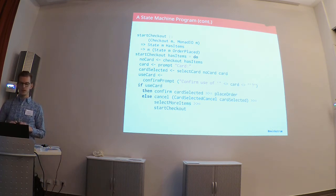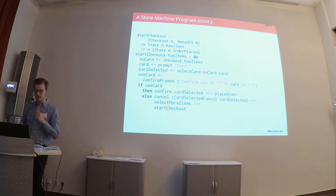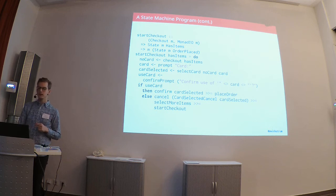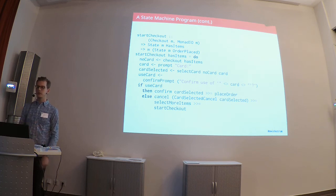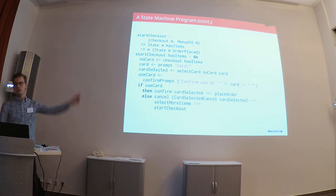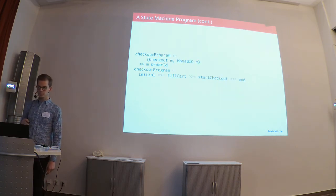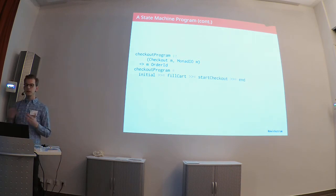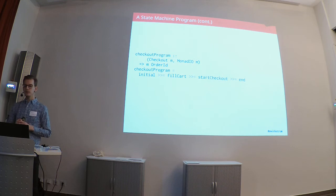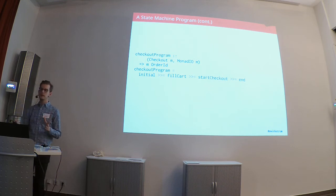StartCheckout's type signature says it goes from HasItems to OrderPlaced all the way to the end. We ask for a card and for a confirmation — you can see the state values being passed around. In the end, if the user confirms, we place the order; if not, we cancel, go back to selecting more items, and restart checkout — so we will eventually end up in OrderPlaced. This is the main program: it creates the checkout flow, runs it, and ends it. We get the order ID back on completion. This concludes the abstract part of this program.